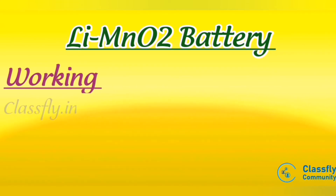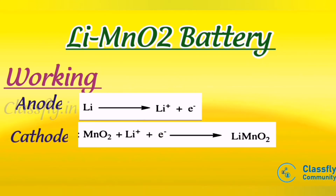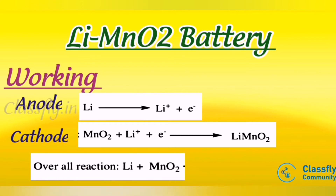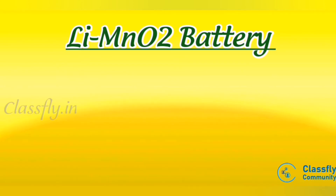For the working of the lithium manganese dioxide battery, the cell reactions are as follows. At the anode: Li → Li⁺ + e⁻ (lithium undergoes oxidation). At the cathode: MnO₂ accepts one electron, reducing Mn from +4 to +3. The overall cell reaction is: Li + MnO₂ → LiMnO₂.